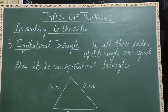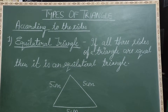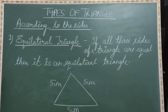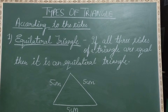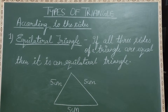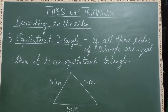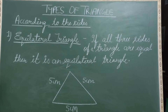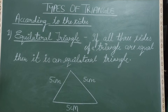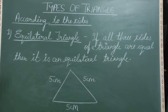We have covered polygons and types of polygons. Now the first type of polygon is a triangle. We know that when a polygon has three sides, it is called a triangle.